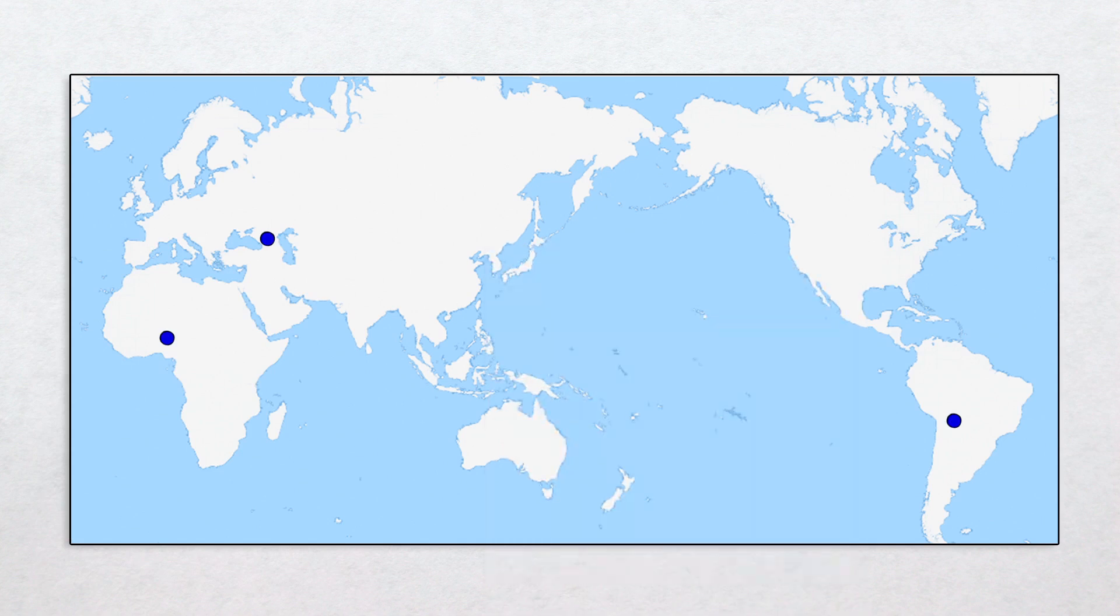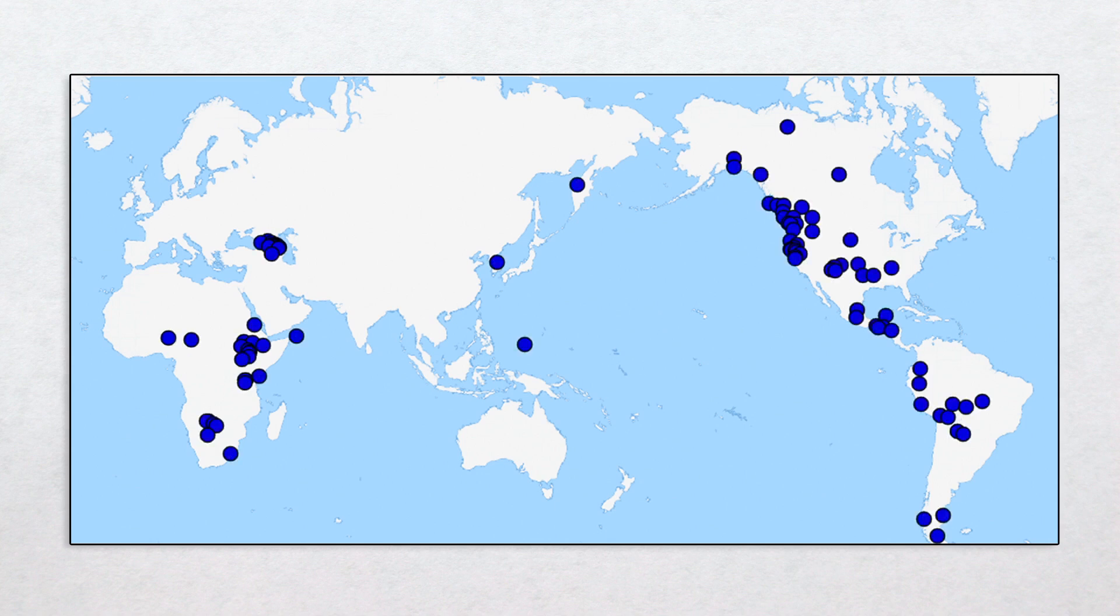If we plot all ejective languages on a world map we get something that looks a little like this. Pretty random, right? Wrong. Noticeable clustering is evident in several locations. But what's really surprising is that this clustering correlates almost perfectly with five of the world's six major high altitude regions.